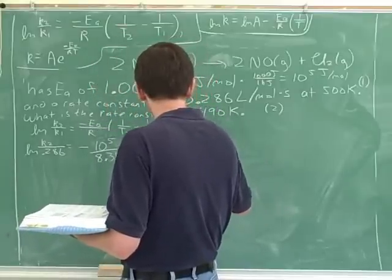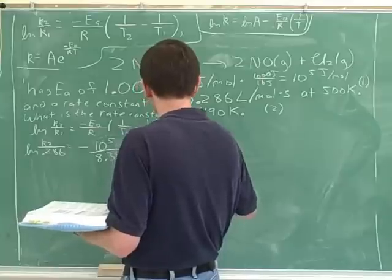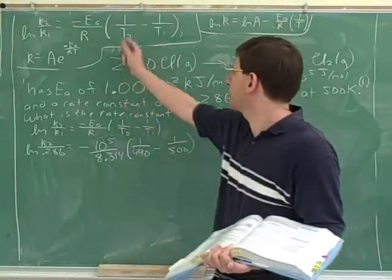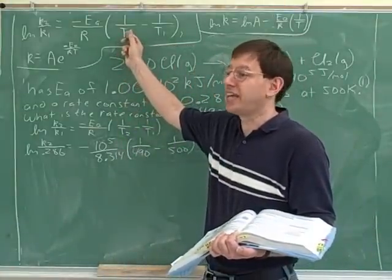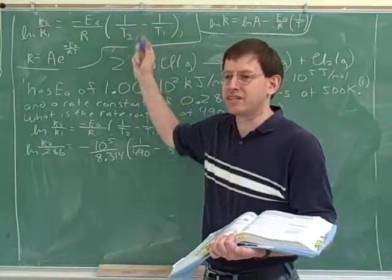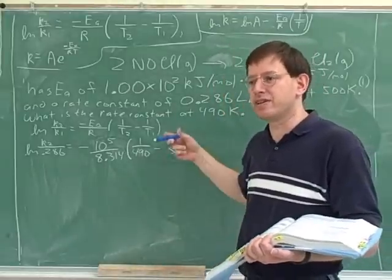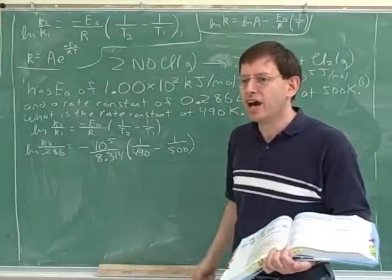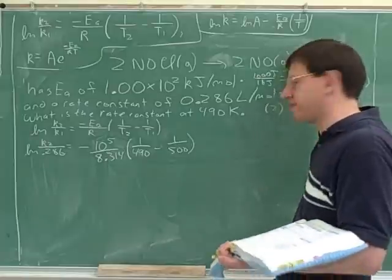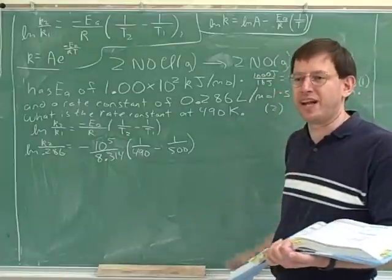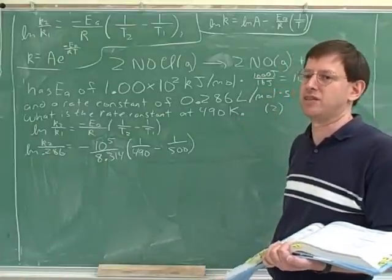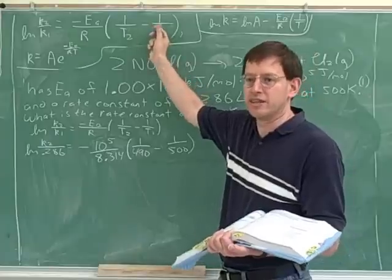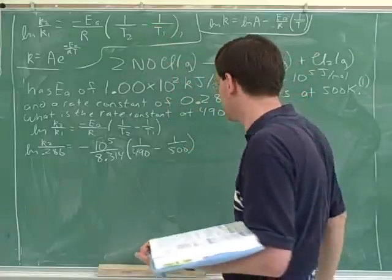Before I forget, there's one trap they didn't use here, but that they could have. What units do we need to use for the temperatures? Kelvin. Yeah, you can't use Celsius. It's a very common trap to give you Celsius and see if you're going to use Kelvins, so watch out for that on the test. Here they gave us Kelvins, but a lot of the time instructors like to use Celsius, and you have to convert that into Kelvin. You must use Kelvin in this equation.